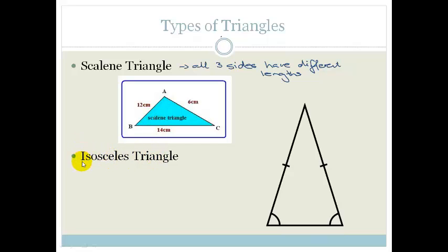An isosceles triangle is one which has two sides equal. And because these two sides are equal, the two base angles are equal as well.